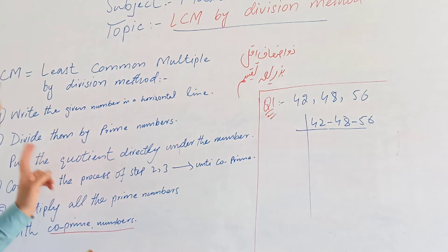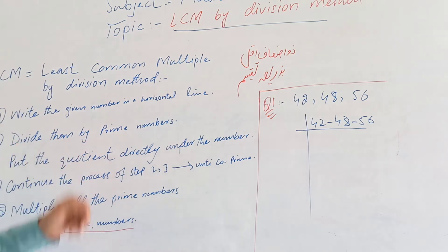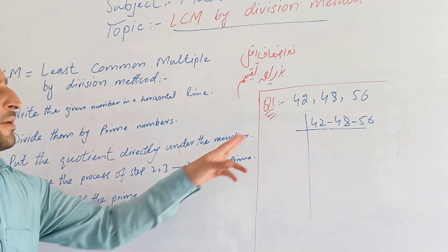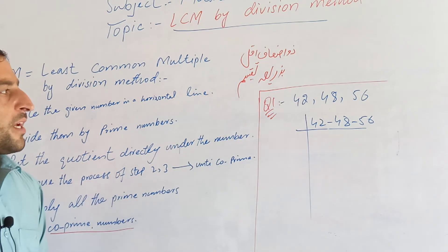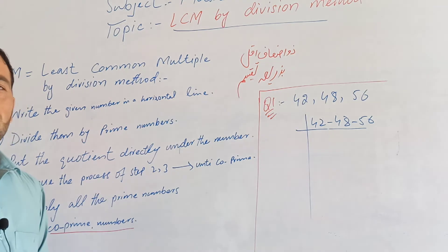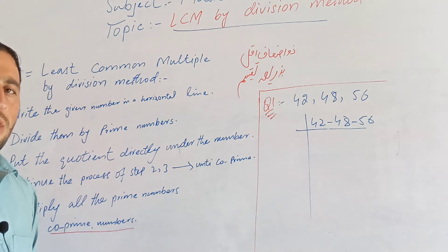Step 2 is to divide the numbers by prime numbers. If you have prime numbers, you can divide. The prime numbers are normal numbers used for division.